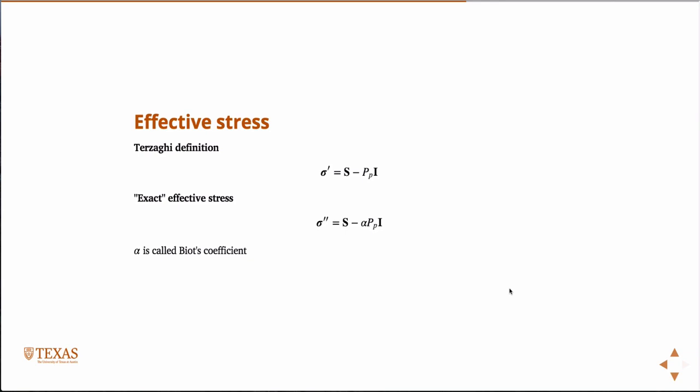This is primarily the definition we'll use in this class. This definition was introduced by this guy, Terzaghi. But there is something called an exact effective stress, or Biot effective stress, and it's got this little correction coefficient right here, it's called Biot's coefficient. Next time I'll show you how that arises, and where that comes from. A lot of times it's a good approximation that this is one, and so therefore it just recovers that. But in certain cases, it may not be one, and you need to have it to have a good effective stress model.